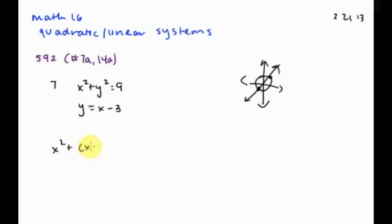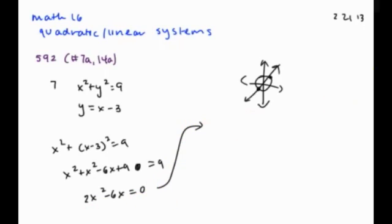x squared plus x minus three squared equals nine. x squared plus x squared minus six x plus nine equals nine. Two x squared minus six x equals zero. Bring it over here. Change color. x squared minus three x equals zero.